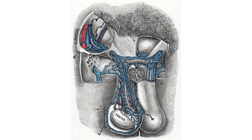The veins of the right half of the male pelvis. The relations of the viscera and large vessels of the abdomen. Transverse section through the left side of the scrotum and the left testis.